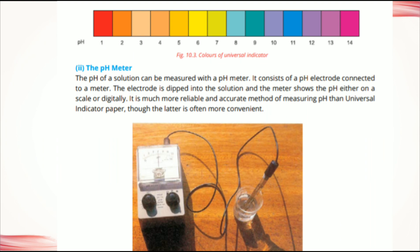The electrode is dipped in the solution. As you can see in the figure, the electrode is connected to the meter and is dipped in the solution. The meter shows the pH either on a scale or digitally. It is a much more reliable and accurate method of measuring pH than the universal indicator paper, because colors from universal indicators can be mixed up, whereas the meter shows an accurate reading.